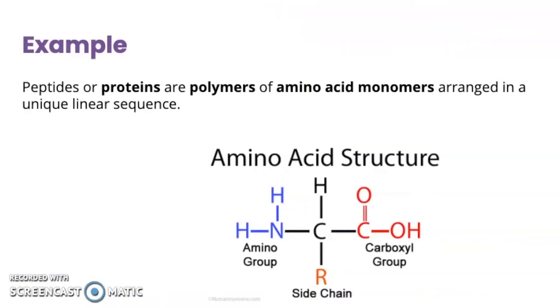Taking a look at the monomer of proteins, these are amino acids. So peptides or proteins are polymers, so larger molecules, poly meaning many, myr meaning a unit of amino acid monomers. So amino acids are the monomers of our proteins, and we have them arranged in a linear sequence. And we have a side chain here that's going to determine the properties of this amino acid, and this can make the amino acid nonpolar or charged.